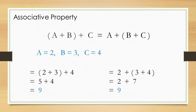Let us take A as 2, B as 3, and C as 4. Then let us apply these numbers into the left side of the expression. 2 plus 3 is equal to 5. Then 5 plus 4 is equal to 9. Thus, the result of the left side of the expression is 9.